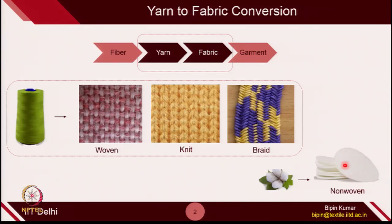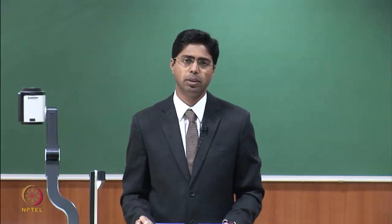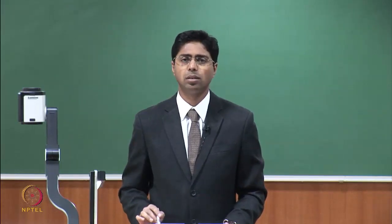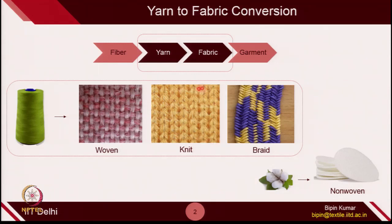Non-woven is also very important nowadays because it just skips the yarn formation. You take the fiber and directly convert it to fabric. This is why it is called non-woven — because we do not include yarn as a process of fabric formation; we just take the fiber and convert it into the fabric. These are the 4 fundamentals of fabric structures used in textile engineering, and knit is one of those structures.